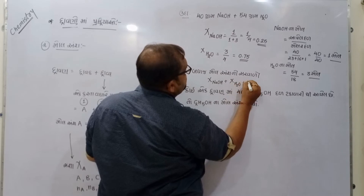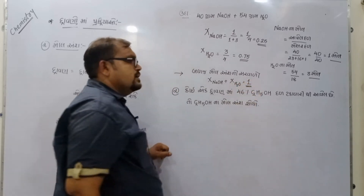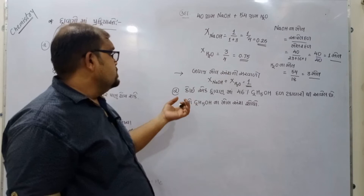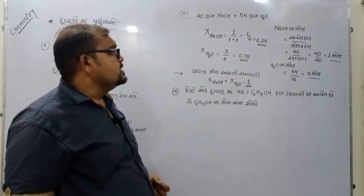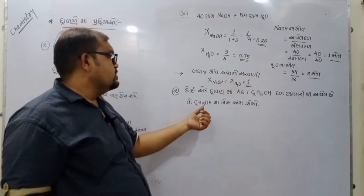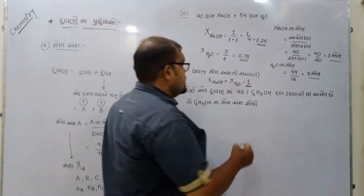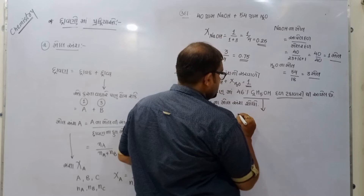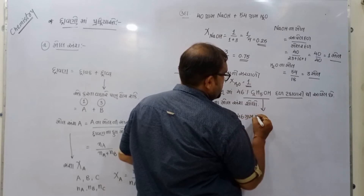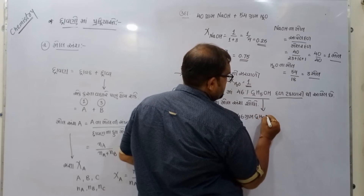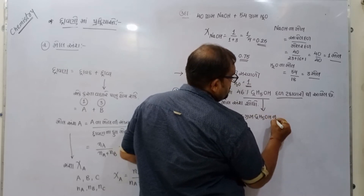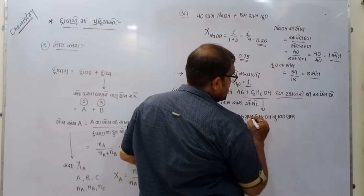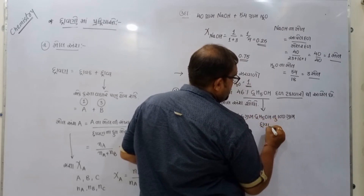ઉ દ ા ર ણ — 46% ઇ થ ે ન ો લ (Ethanol) — દ ળ ટ ક ા વ ા ર ી. ત ે ન ો મ ત ્ ત ્ ત ળ બ : 46 ગ ્ ર ા મ ઇ થ ે ન ો લ 100 ગ ્ ર ા મ દ ્ ર ા વ ણ મ ા ં. Ethanol ન ો મ ો લ અ ં શ શ ો ધ ો.